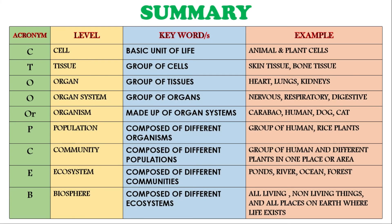You can see the acronym I made for you so that it will become easier for you to memorize the level of biological organization. We have C-T-O-O-O-P-C-E-B: C for cell, T for tissue, O for organ, O for organ system, O for organism, P for population, C for community, E for ecosystem, and B for biosphere. I also have keywords so that you can describe each level easily, and of course some examples for each level.